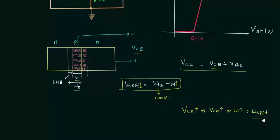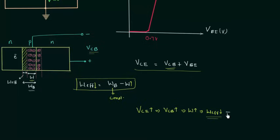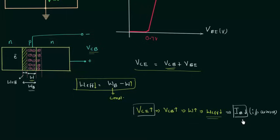Now we see the effect on input current. When W_effective decreases, the region where recombination takes place decreases. Because of this, recombination decreases — electrons emitted from the emitter will not recombine with holes in the base region — and this reduces the base current IB, which is the input current. So on increasing the output voltage VCE, the base current IB decreases. Vice versa is also true: on decreasing VCE, the input current IB increases.